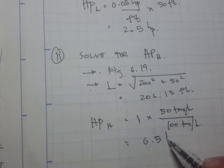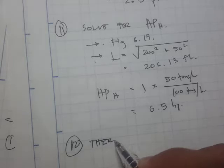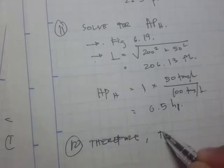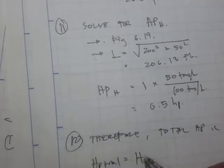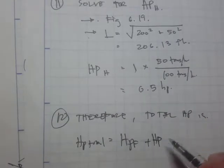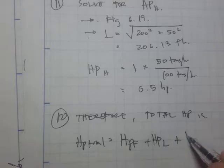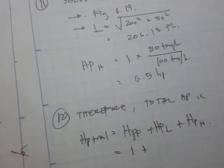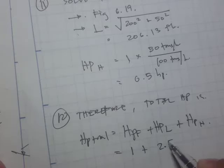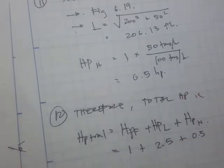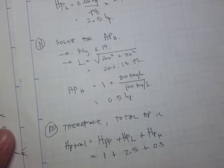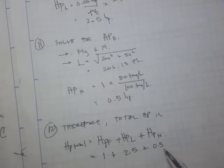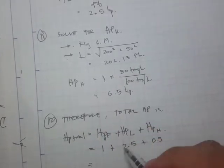The horizontal horsepower is 1 HP times the required capacity of 50 tons per hour divided by 100 tons per hour, giving us 0.5 HP. Therefore, the total HP is simply the sum: friction HP plus HP to lift plus HP horizontal — 1 HP plus 2.5 plus 0.5 — which is 4 HP.